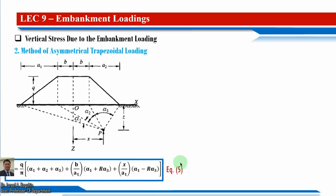The second method is the asymmetrical trapezoidal loading method. This involves only three angles: alpha1, alpha2, and alpha3. It is called symmetrical because the width on each side equals b, making the geometry symmetric. The values of a1 and a2 may vary, but the widths are symmetric, and equation 5 is used to calculate vertical stress at any depth z.